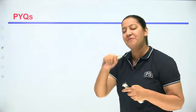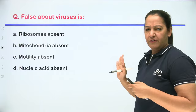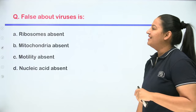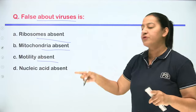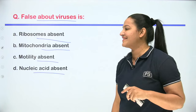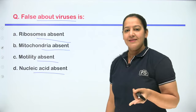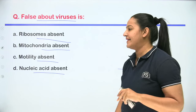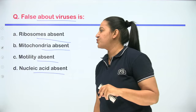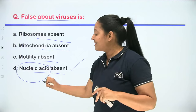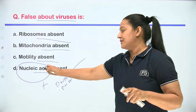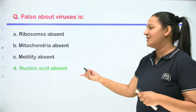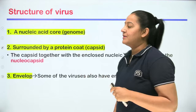Now let's solve a PYQ on general properties. The question: What is false about viruses? Options: ribosome absent, mitochondria absent, motility absent, nucleic acid absent. The correct answer is D — nucleic acid absent — because nucleic acid is always present in viruses, either DNA or RNA. The remaining options (ribosome absent, mitochondria absent, motility absent) are all true.